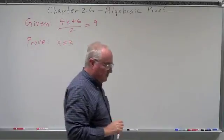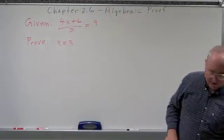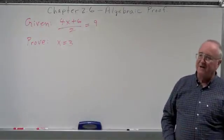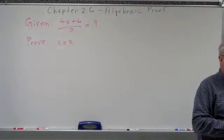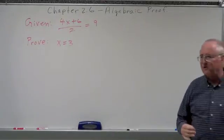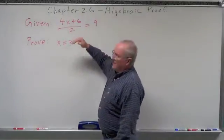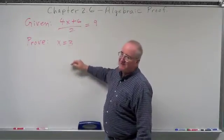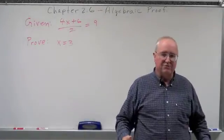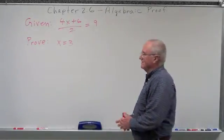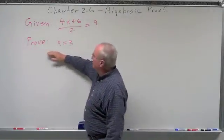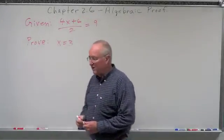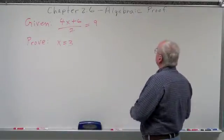When we do formal proofs, your first statement — we're going to end up with a two-column proof, also called a formal proof. You're going to have a column of statements and a column of reasons. Your first statement is going to be your given or your givens. I like to put each given separately. If there are three givens, you start with three statements. The very last statement is going to be the proof statement.